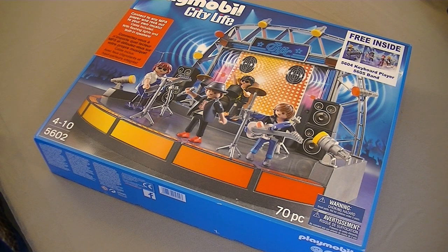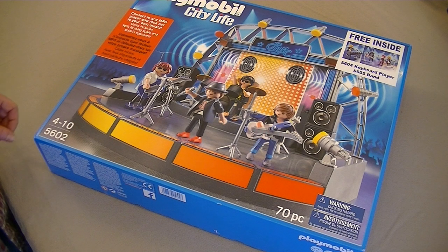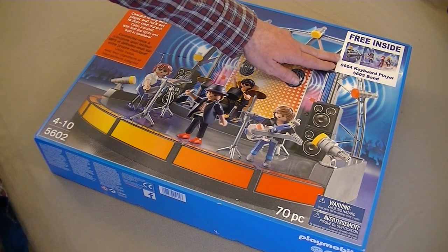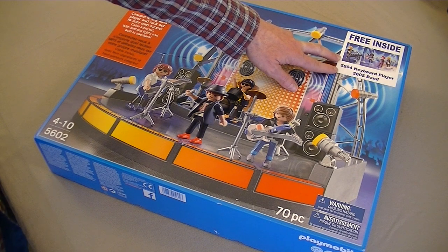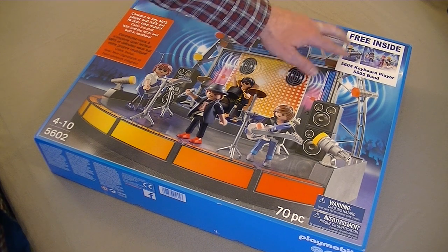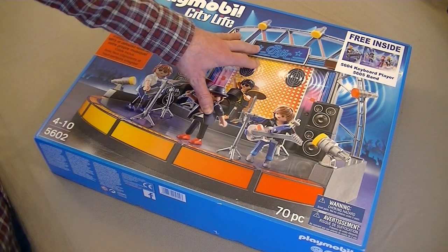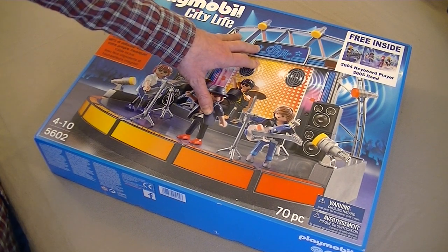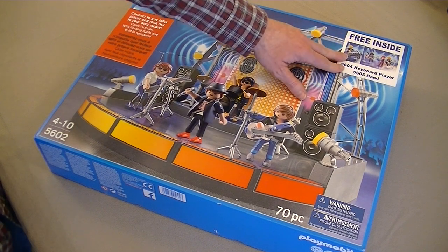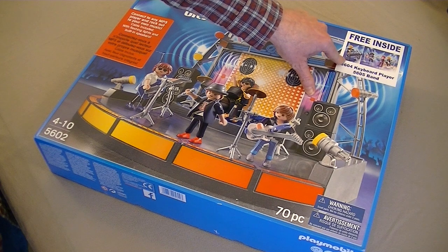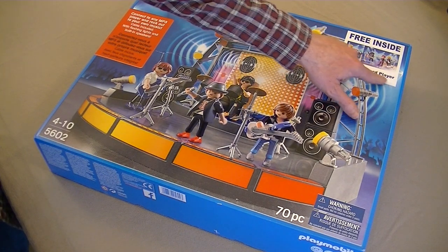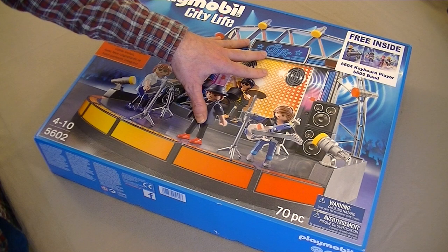Well here it is, the Playmobil City Life Popstars stage. Now there are 70 pieces inside this box but they don't include the two extra sets that I actually got with this particular set. Inside here free there is also item 5604 keyboard player and 5605 band. Now as far as I know you only get these free sets when you buy this particular popstar stage from a company called Argos in the UK. You can buy this set from Amazon as well but it doesn't actually come with these two free inside.